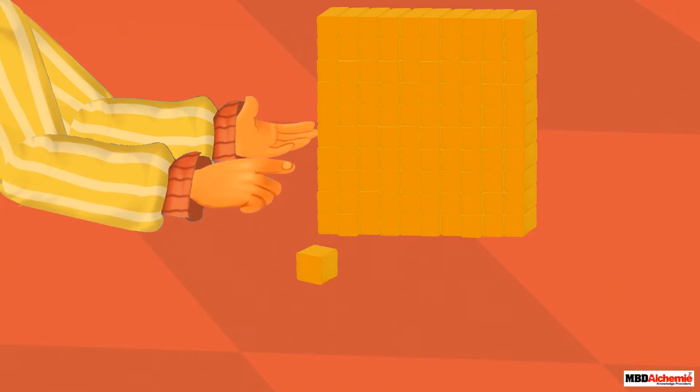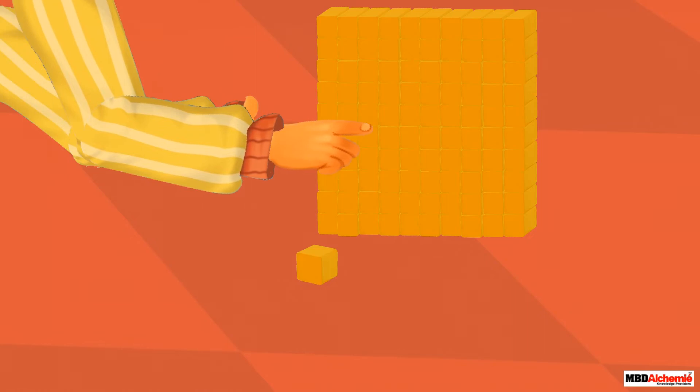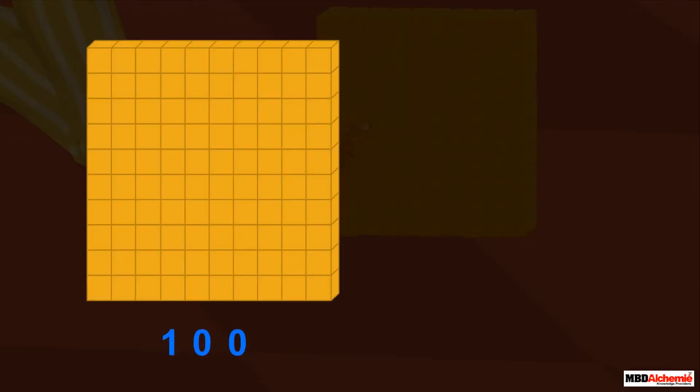She starts counting it to find the number these blocks represent. 100 block and 1 one's block represent 101.